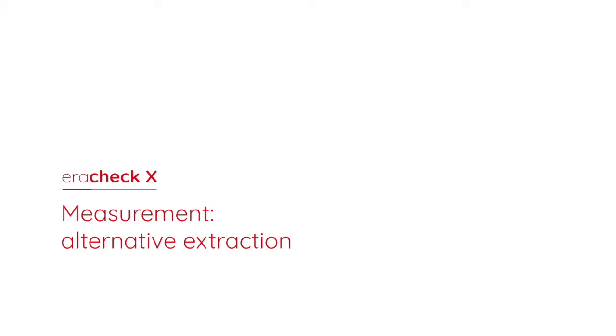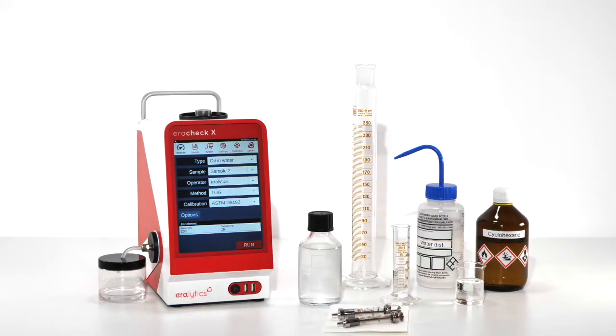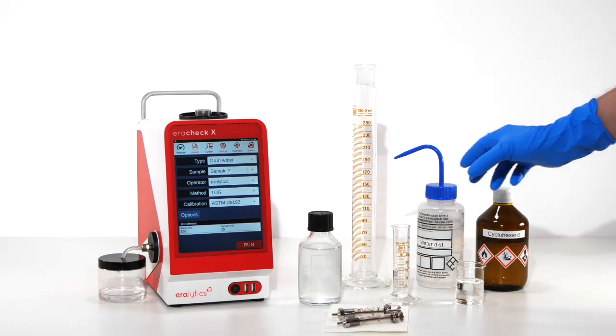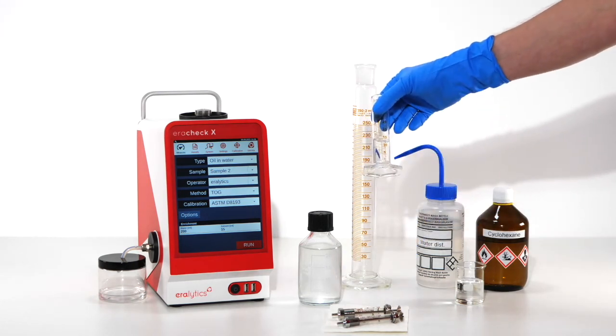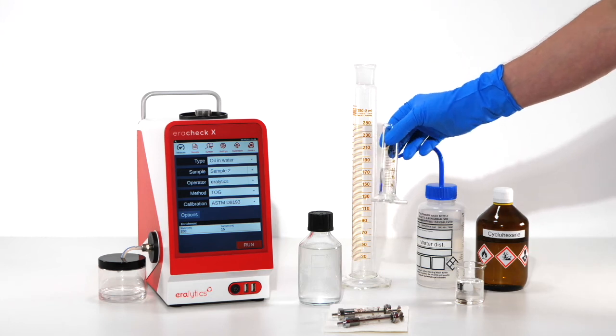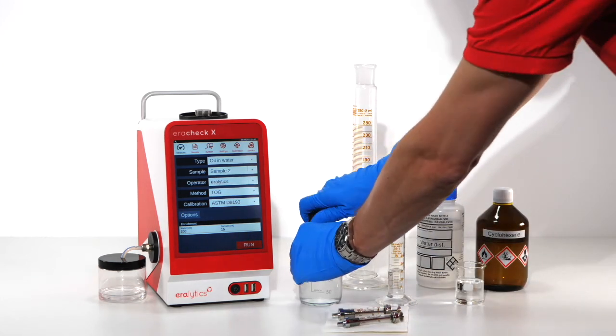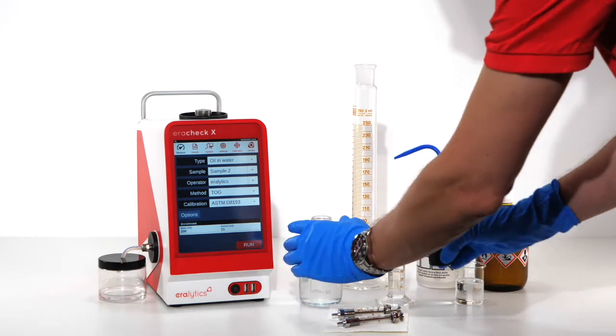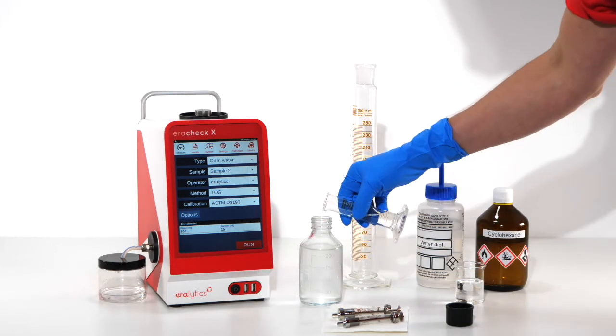Alternative extraction. In case the exact sample volume is unknown, the following procedure can be applied. Prepare 15 ml of fresh cyclohexane in the small graduated cylinder. Pour the cyclohexane into the sample bottle. Close it.